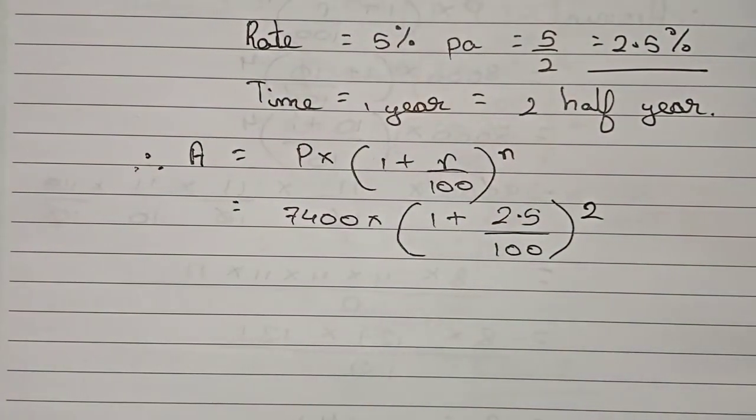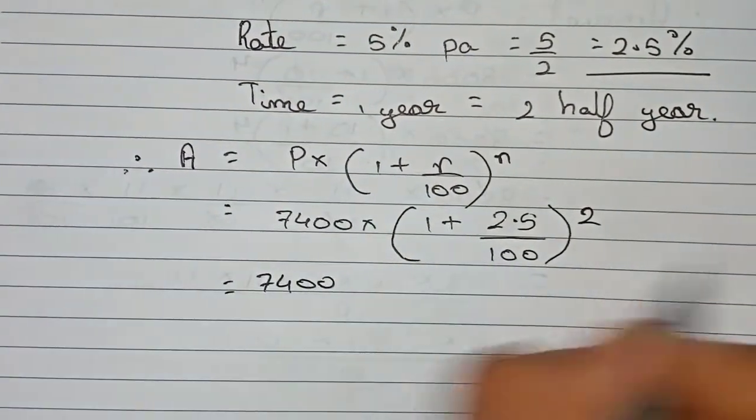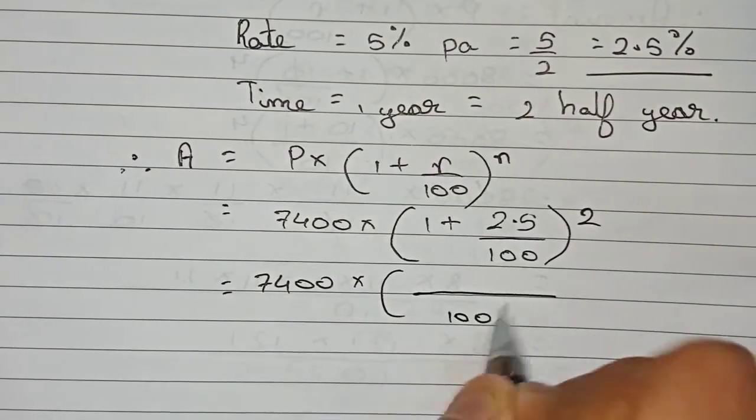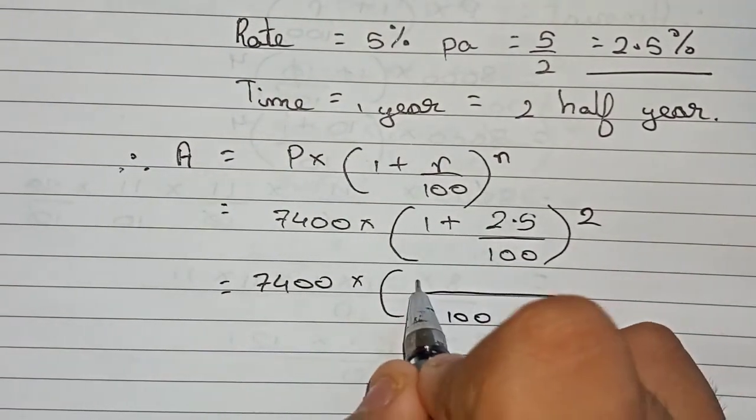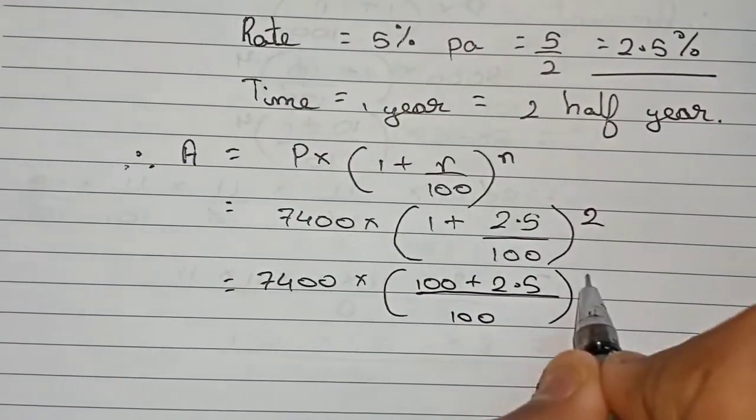If you solve this, first solve the inside portion of the bracket. Take LCM 100: 100 × 1 = 100 plus 2.5, to the power 2.